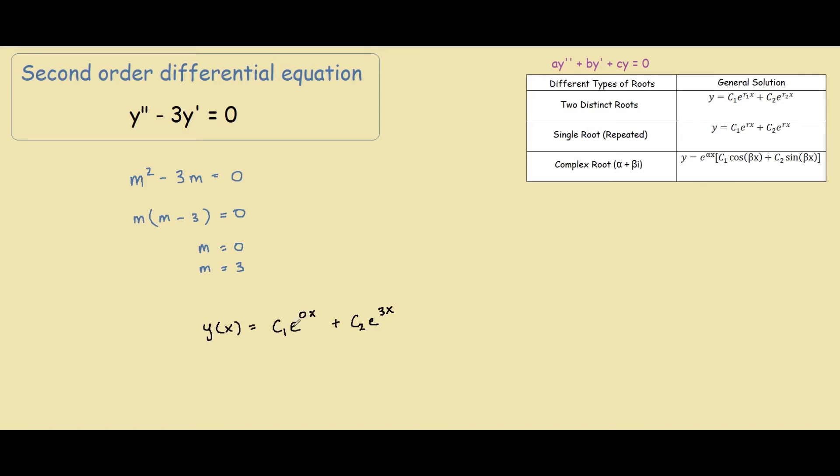And we also know e raised to the power of zero is just 1, so our answer is actually c1 plus c2 e to the 3x.